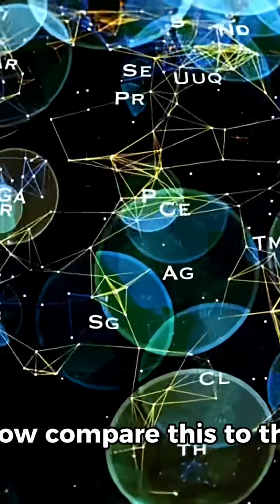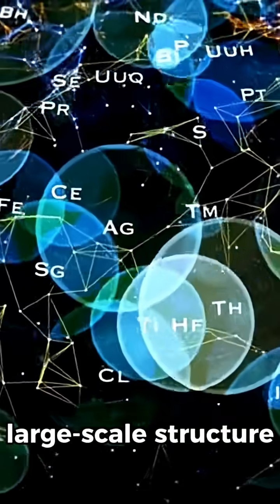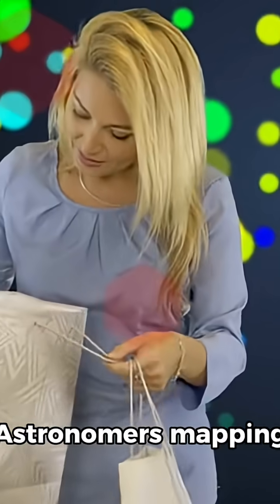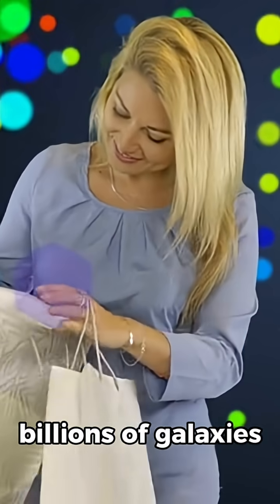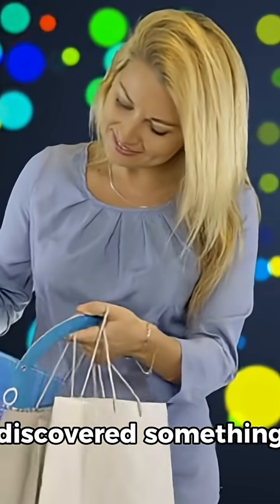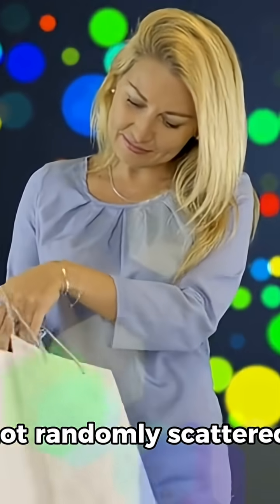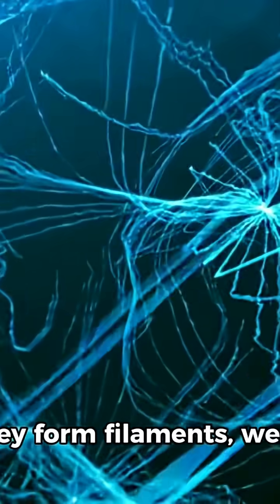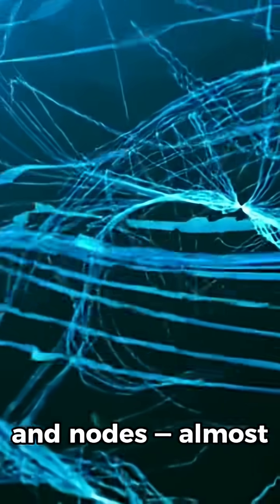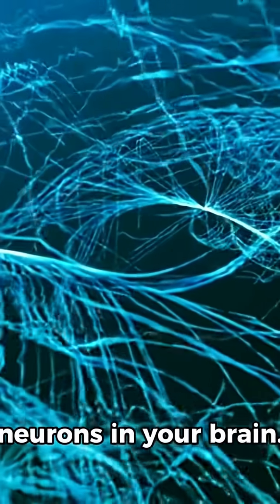Now compare this to the large-scale structure of the universe. Astronomers mapping billions of galaxies discovered something astonishing. Galaxies are not randomly scattered. They form filaments, webs, and nodes, almost identical to the pattern of neurons in your brain.